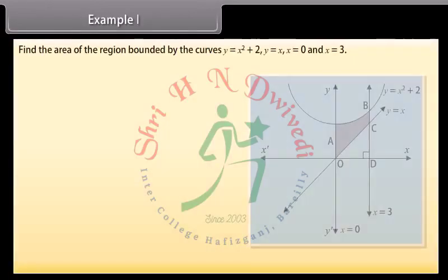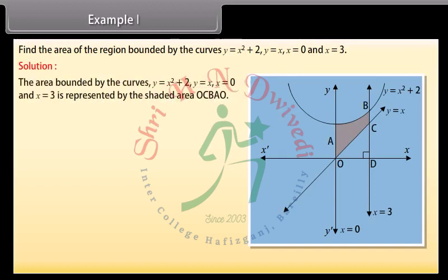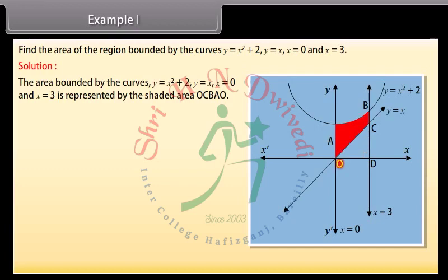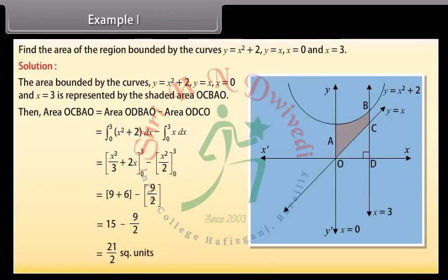Example 1: Find the area of the region bounded by the curves y = x² + 2, y = x, x = 0, and x = 3. Solution: The area bounded by the curves is represented by the shaded area OCBAO. Area of OCBAO = area of ODBAO − area of ODCO = ∫[0 to 3] (x² + 2) dx − ∫[0 to 3] x dx. By solving, we get 21/2 square units.